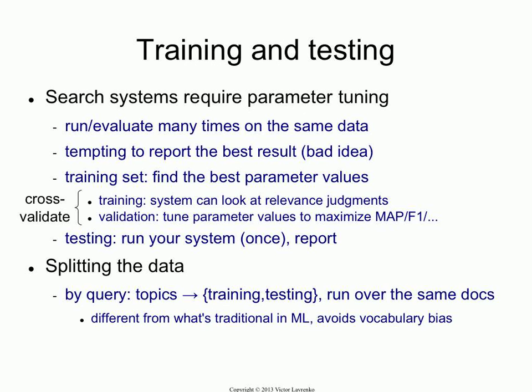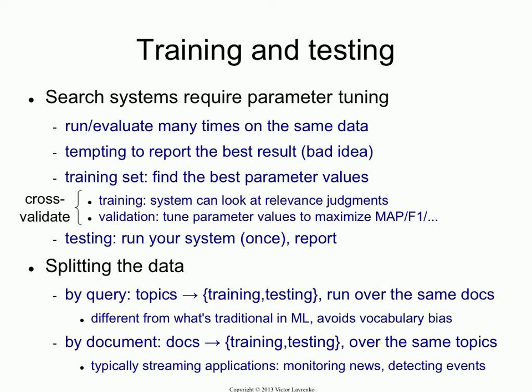In some cases, you do the more conventional split where you split by documents — the documents get split into two sets and you have a single set of queries running over them. That's usually done in streaming applications. If you're writing a system to monitor the news or detect events, you do splits like that. For normal retrieval experiments, you always split the queries into two sets and keep the document set the same.